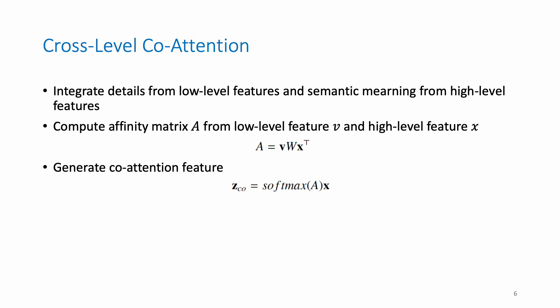In the cross-level co-attention module, we integrate details from low-level features and semantic meaning from high-level features. Specifically, we compute affinity matrix A from the low-level feature V and high-level feature X, and then generate the co-attention feature from A and X.